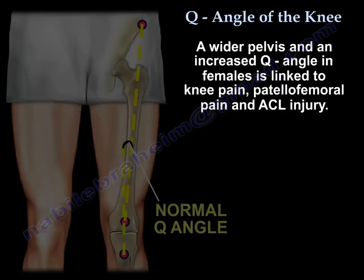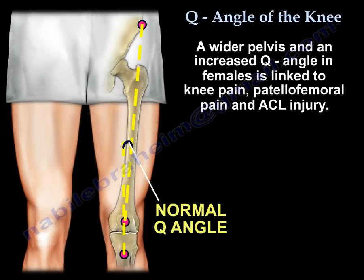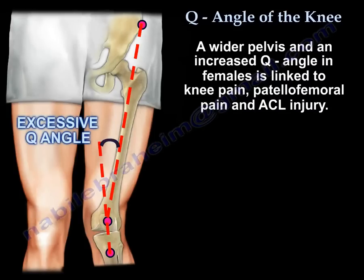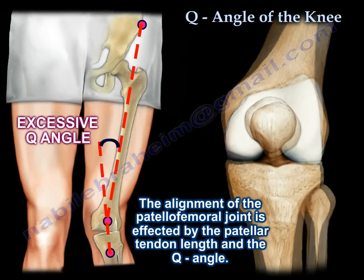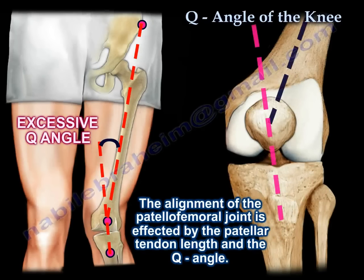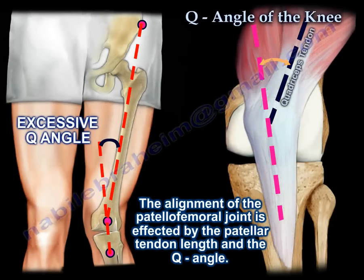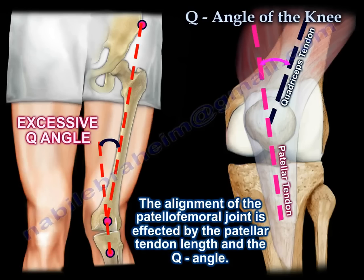Here is an example of a normal Q-Angle, and here is an example of an excessive Q-Angle. The alignment of the patellofemoral joint is affected by the patellar tendon length and the Q-Angle.